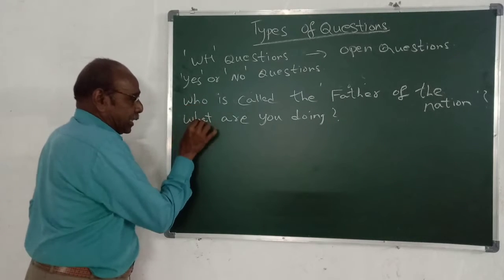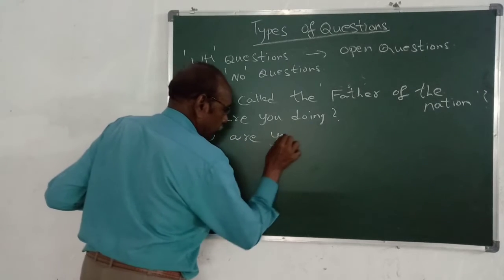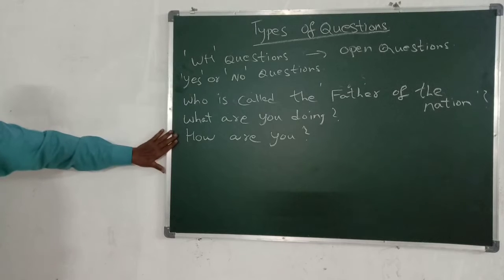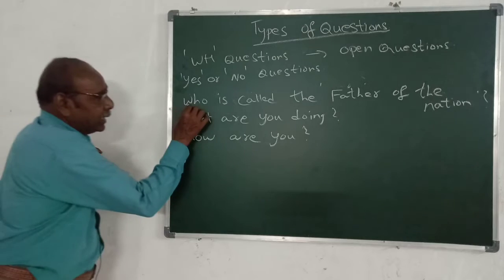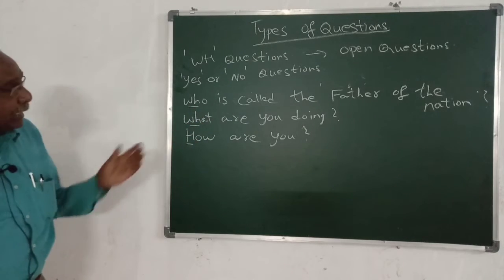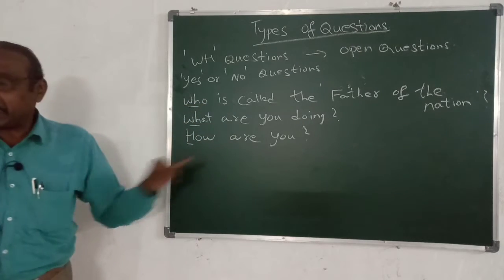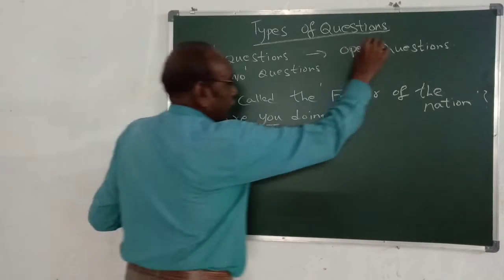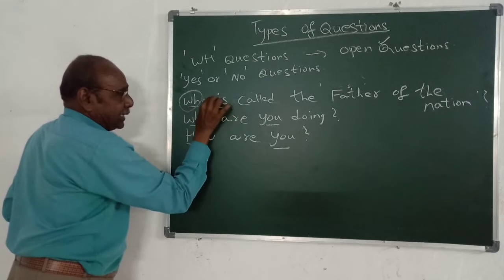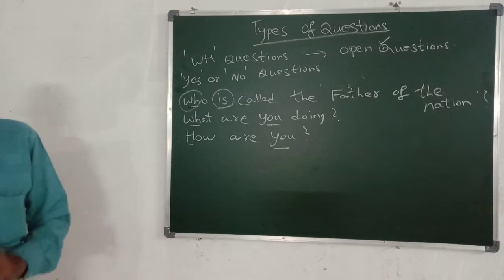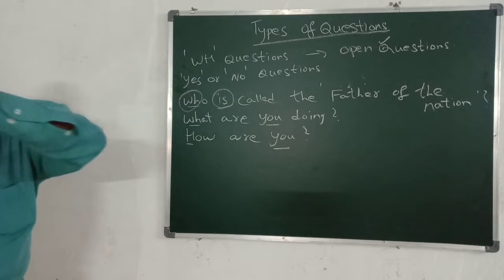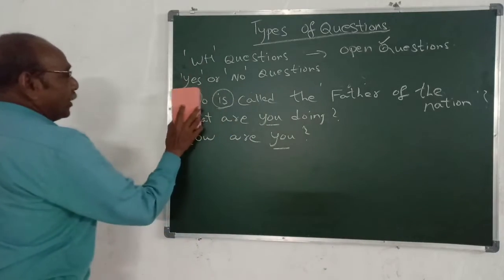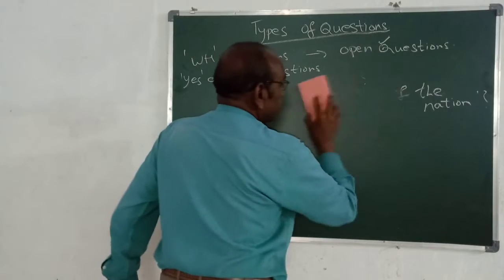Why are they called WH questions? Because they start with WH or with H itself — like 'how are you?' Answer: I am fine, I am good, I am doing well. WH questions start with a WH word, followed by the helping word, then the subject. They are called open questions because you have to answer in full — in a sentence or in a few words.